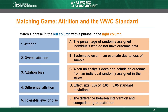What phrase does the term differential attrition match to? The correct answer is E: the difference between intervention and comparison group attrition. That leaves the tolerable level of bias, which matches to an effect size of 0.05 standard deviations. If the attrition rate leads to an expected bias of less than 0.05 standard deviations in absolute value, the WWC considers that a tolerable level of bias and thus low attrition. The WWC applies this standard to each time point of each outcome, so it is possible for a study to have high attrition for one outcome and low attrition for another.